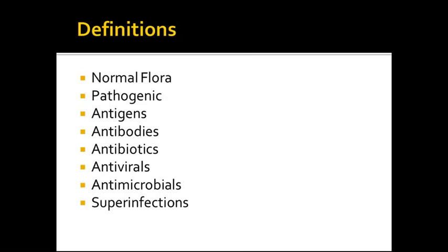Some definitions you will want to be familiar with in this unit. Normal flora is bacteria inside and outside of our body that does not cause disease. Pathogenic is considered a bacteria or microorganism that causes disease. Our best defense mechanism within our body is our skin. Antigens are foreign invaders. Antibodies are what the body produces when unfamiliar organisms enter the body. Antibiotics are a class of medications that we use to treat bacterial infections.